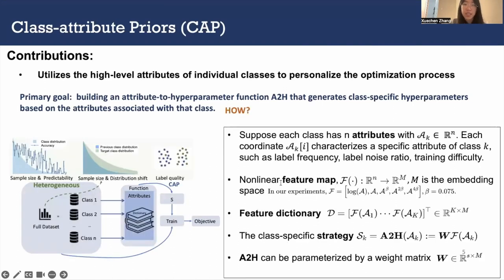Then how to do that? As shown at the top of the figure, there are many types of heterogeneity. The dataset has good sample size, and some classes are easy to classify, some are difficult, which is defined as predictability. Some classes may have more noisy labels than the others. We use those as attribute A.